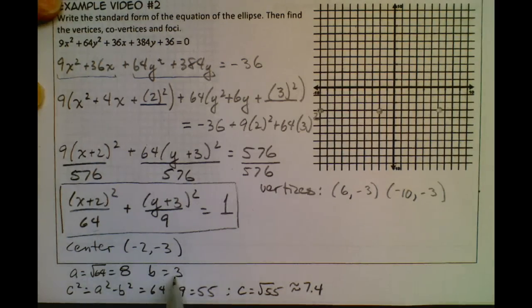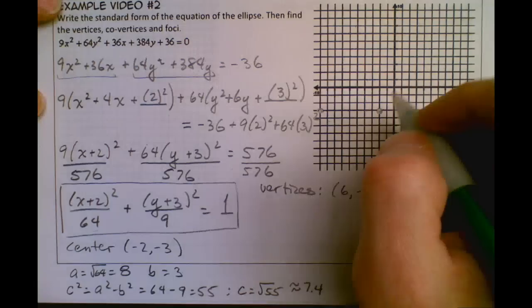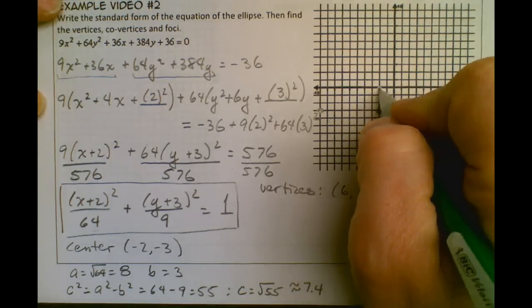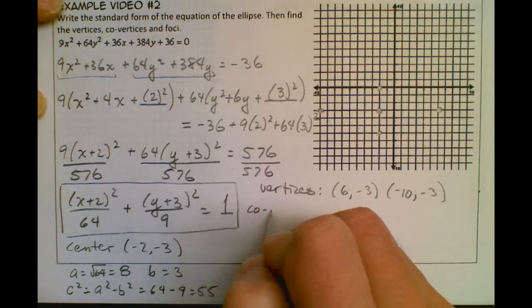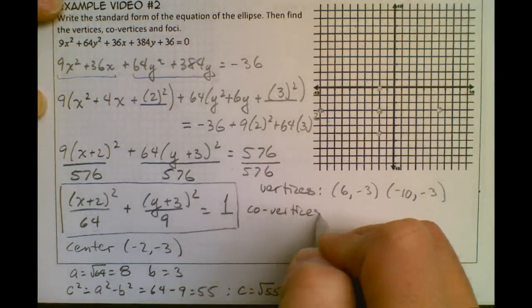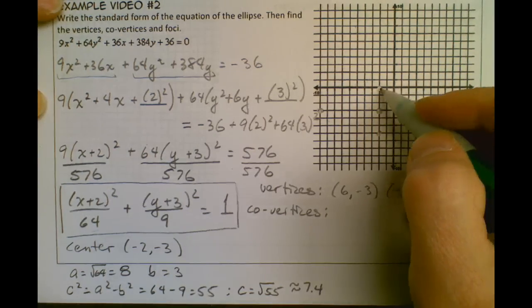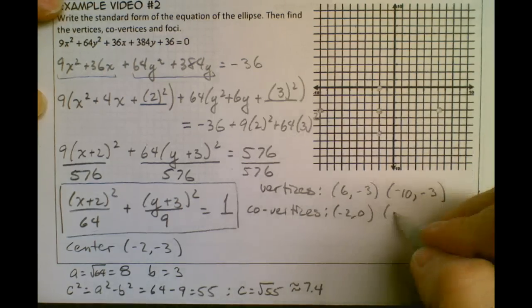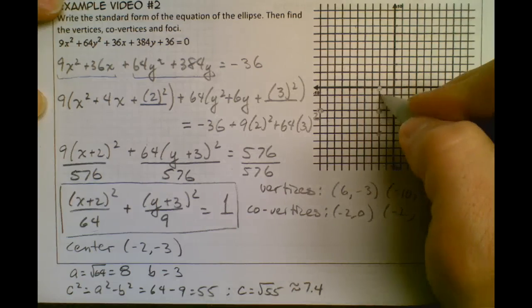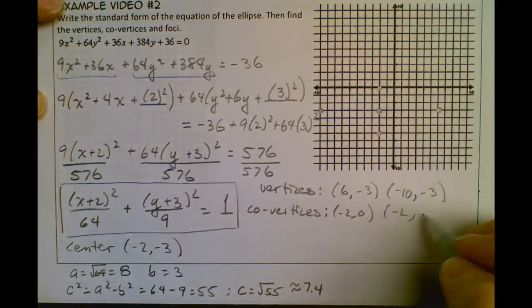Now I'm going to use b, 3, and I'm going to go up 3 and down 3. So my co-vertices then are going to be at (-2, 0) and (-2, -6).